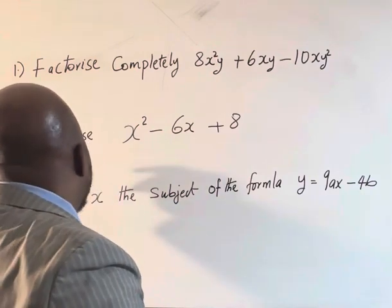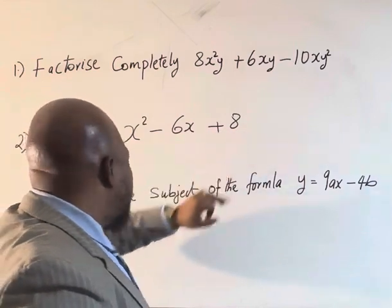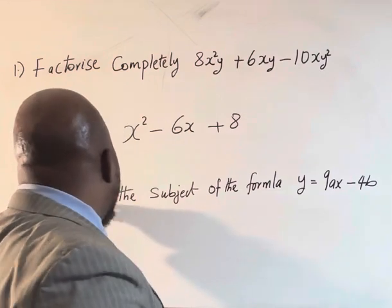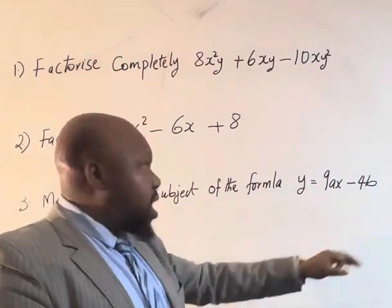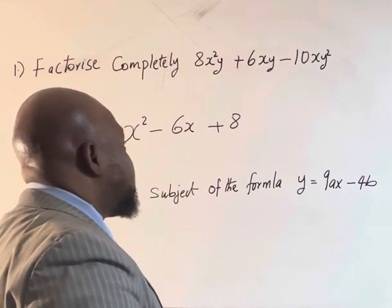The second one is factorize s squared minus 6s plus 8, and the last one is make s the subject of the formula. For the first one, what we need to do is factorization as it has always been.